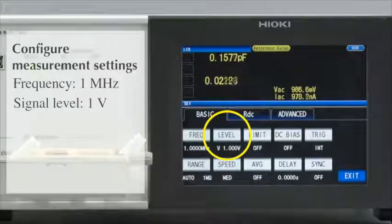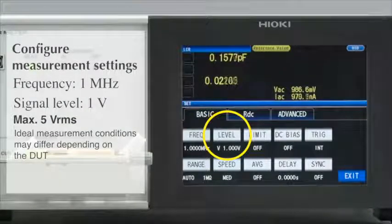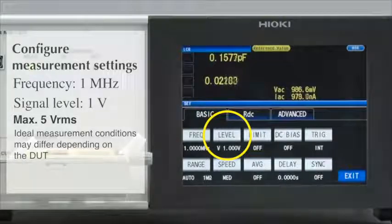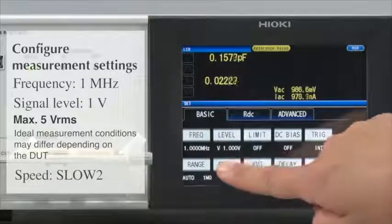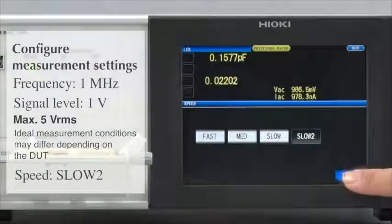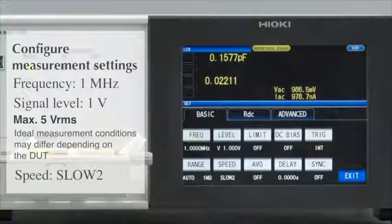The measurement voltage will remain at the default setting of 1 V. Set the speed to Slow 2. By selecting Slow 2 as the measurement speed, you can achieve more stable measurements.